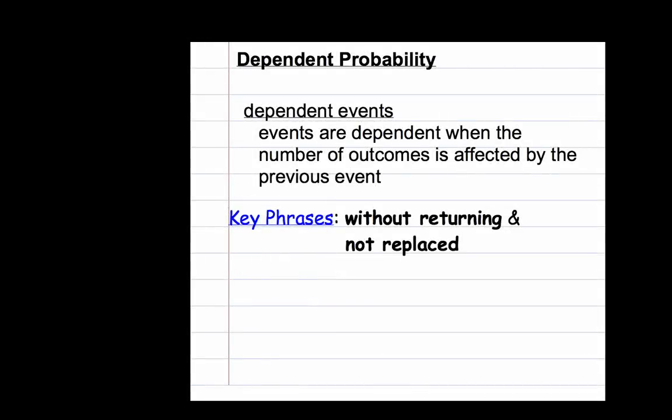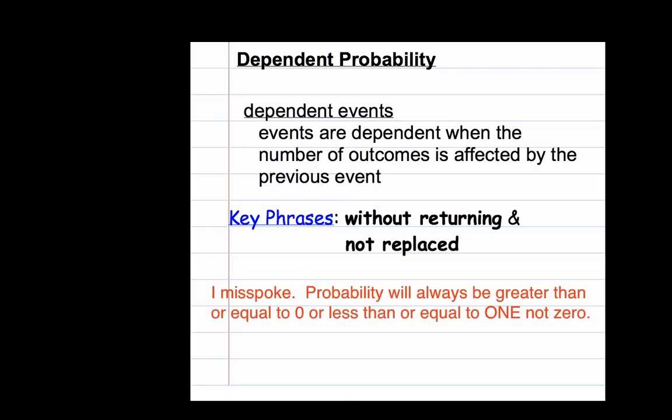On this lesson we're going to talk about dependent probability. Probability is the number of chances that an event can occur over the total possible outcomes — the TPO. Probability will always be a fraction. It will always be greater than or equal to zero and never greater than one, but it can be anything in between, including those numbers.